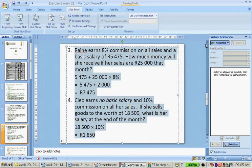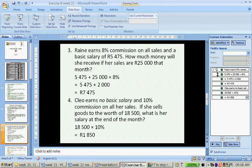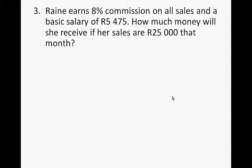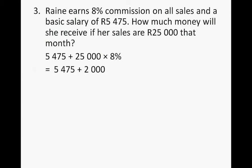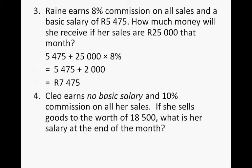Rain earns 8% commission on all her sales and a basic salary of $5,475. How much will she receive if her sales are $25,000? It's $5,475 plus 8% of $25,000. 8% of $25,000 is $2,000, so she earns $7,475. Clue earns no basic salary and 10% commission. If she sells goods worth $18,500 per month, her salary is $18,500 times 10%, which is $1,850.